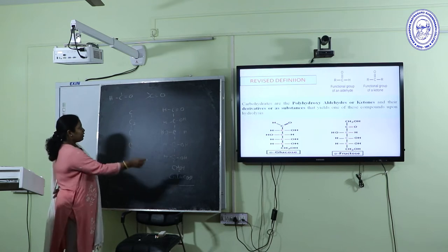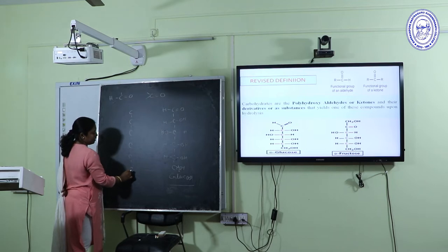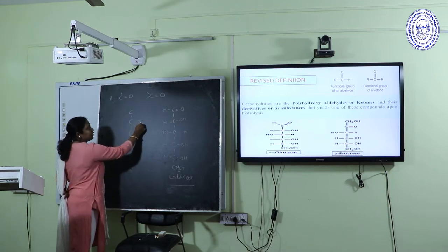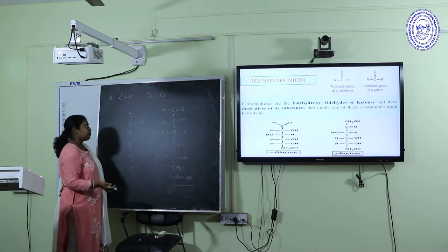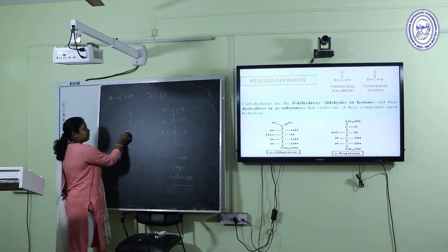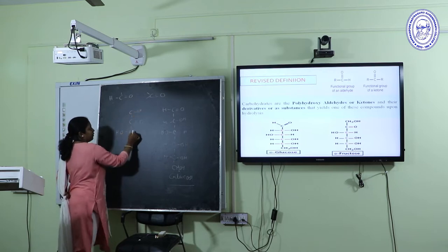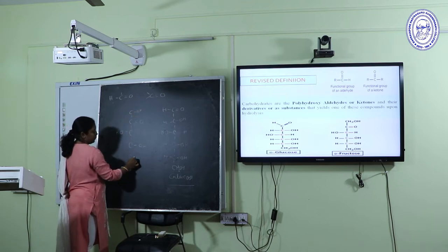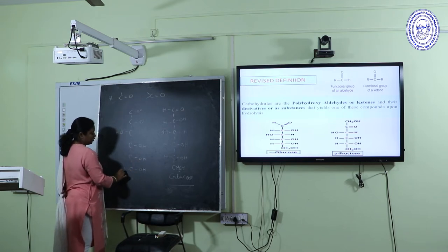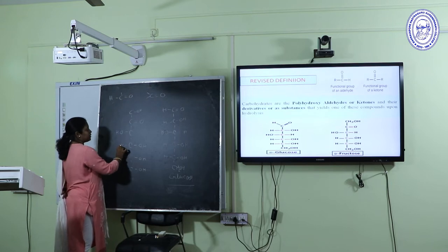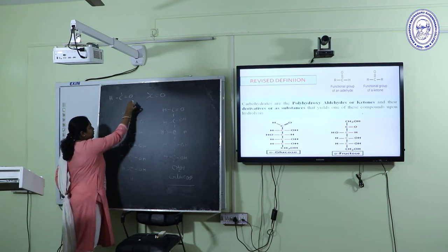Similarly for fructose, write 6 carbons: 1, 2, 3, 4, 5, 6. At position 2, place the ketone group. The rest of the rules are similar to glucose: at carbon 3 on the left side, hydroxyl group; on the rest of the carbons on the right side, hydroxyl groups; and fulfill the remaining valency with hydrogen atoms. These are the basic open ring structures of glucose and fructose.